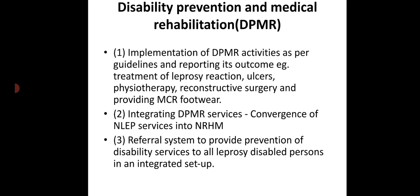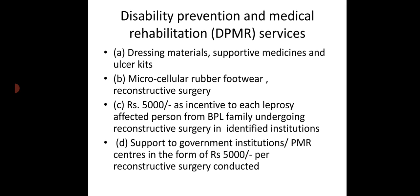DPMR services — Disability Prevention and Medical Rehabilitation — include: implementation of DPMR activities as per guidelines and reporting outcomes, such as treatment of leprosy reactions, treatment of ulcers, physiotherapy, reconstructive surgery, and providing MCR footwear. DPMR services are integrated with NLEP and converged with NRHM (National Rural Health Mission). Financial provisions include Rs. 5000 as incentive to each leprosy-affected person from a BPL family undergoing reconstructive surgery in identified institutions, and Rs. 5000 support per reconstructive surgery to government institutions or PMR centers.